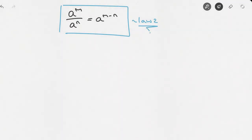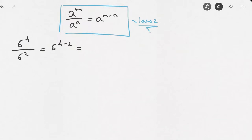We can use this law to simplify exponential expressions. For instance, if we're asked to simplify 6 raised to the power of 4 over 6 raised to the power of 2, using the second law of exponents we can write that this equals 6 to the power of 4 minus 2, which equals 6 to the power of 2.